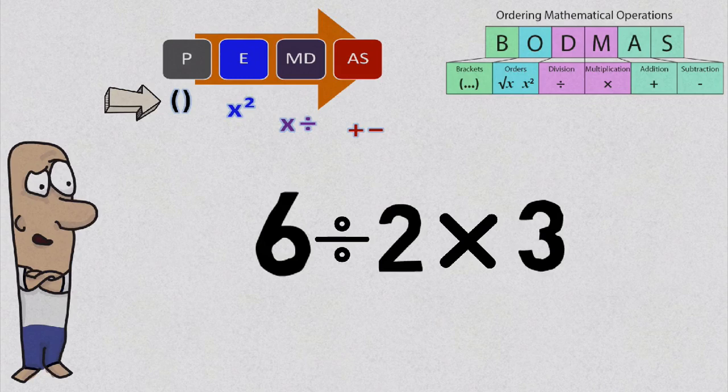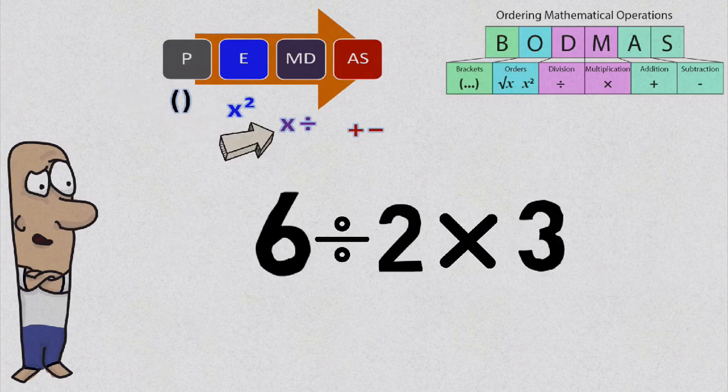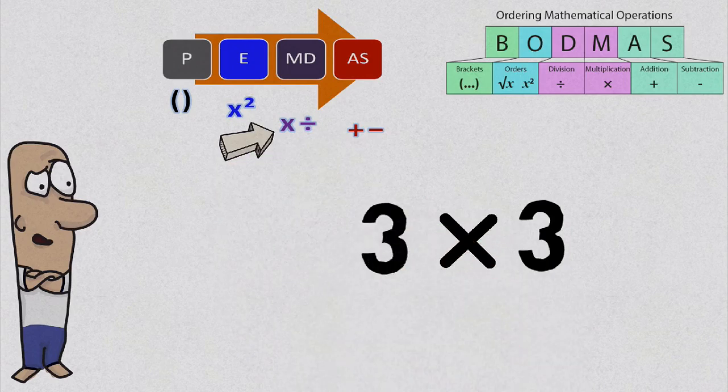And at this point, our problem contains division and multiplication operations. And we should note two things here. Firstly, according to PEMDAS or BODMAS, both operations, which is division and multiplication, have the same precedence. And because they have the same precedence, we evaluate the problem from left to right. So, our problem becomes... Which gives us 9.